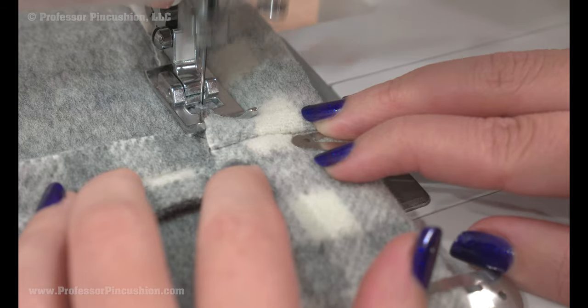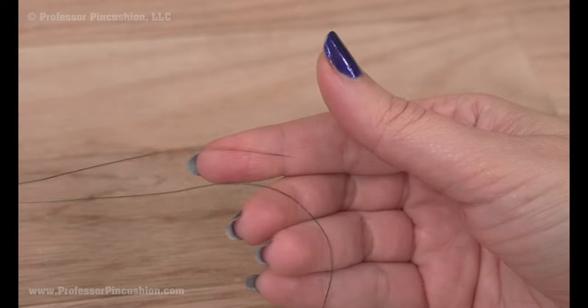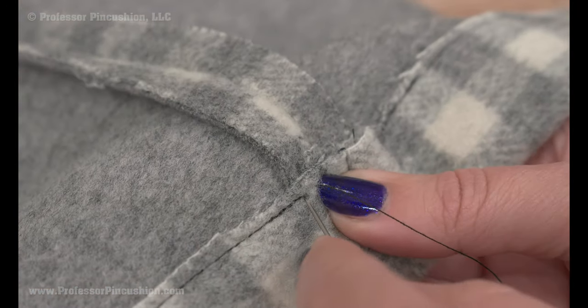If after all this and your machine is still having trouble, sew as much as you can using your sewing machine and then sew the problem areas by hand using a thicker needle like a size 3 or 4.